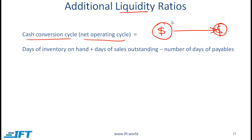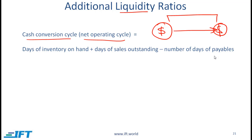Obviously, if this period is short, that means high liquidity. If this period is long, that means low liquidity. The formula for calculating the net operating cycle is days of inventory on hand plus days of sales outstanding minus number of days of payables.